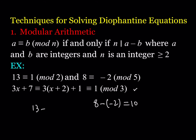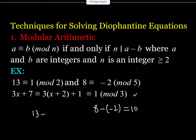If the difference of two numbers is divisible by another integer greater than or equal to 2, then they're equivalent in that mod. For example, 13 is congruent to 1 mod 2 because 13 minus 1 is 12, and 12 is divisible by 2. Also, 8 is congruent to negative 2 mod 5 because 8 minus negative 2 is 10, and 10 is divisible by 5.